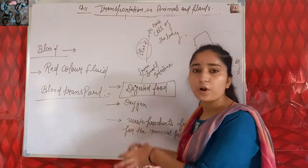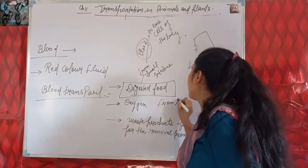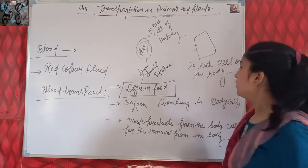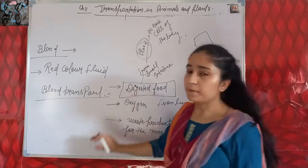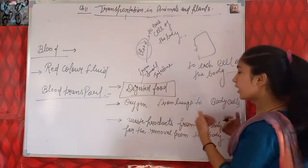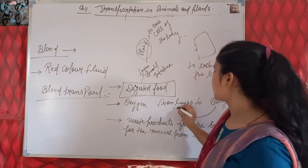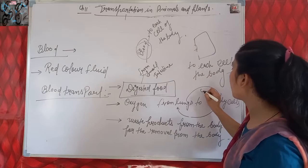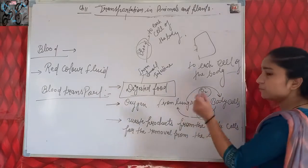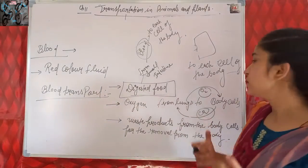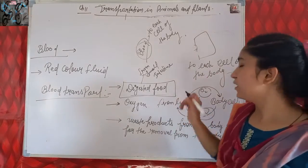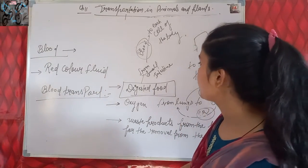Blood transports oxygen from lungs to body cells. Blood also transports carbon dioxide from body cells to lungs. So from lungs to body cells, oxygen is transported, and from body cells to lungs, carbon dioxide is transported - both with the help of blood.